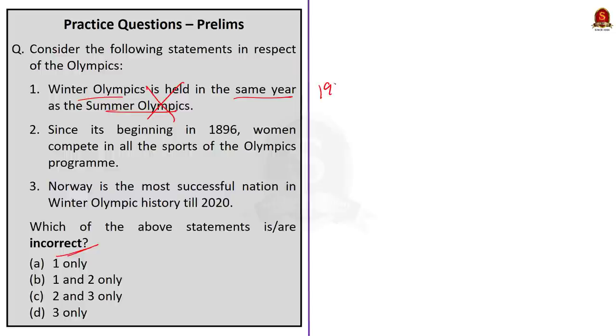But after this, Summer and Winter Games are each still held every four years, but they are held in the different years of an Olympiad. The Summer Games are celebrated during the first year of an Olympiad, and the Winter Games are in the third year. Now, moving on to the second statement. Since its beginning in 1896, women compete in all sports of the Olympic program. This statement is also incorrect. We know that the first Olympic Games was held in Athens in 1896. But only in the games of Paris, which was held in 1900, women started participating in Olympics. And it took over a century and a decade for women to compete in all sports on the Olympic list. This finally happened in the 2012 Games in London. So, statement two is incorrect.